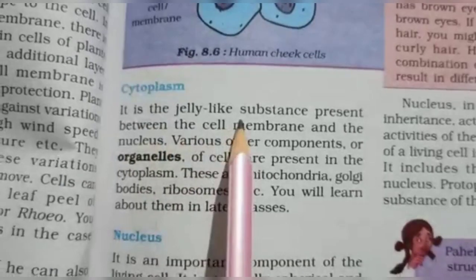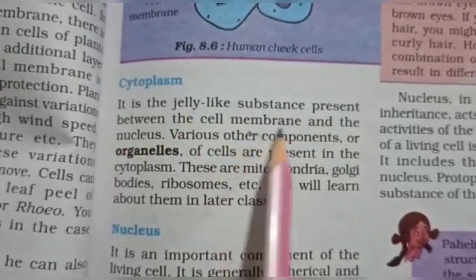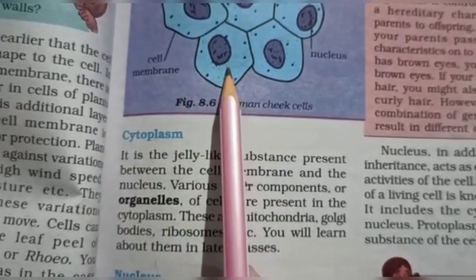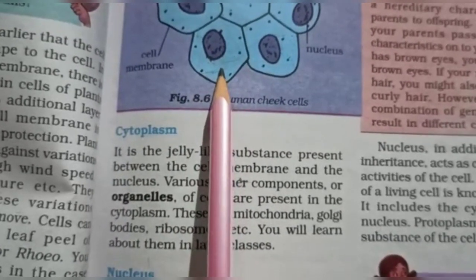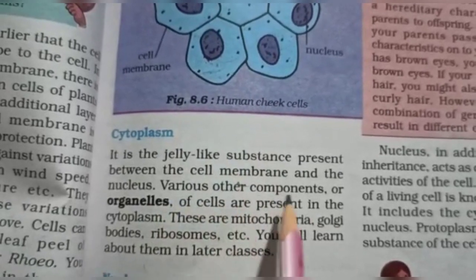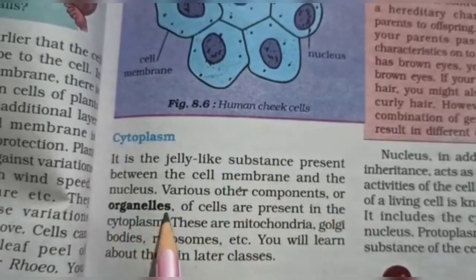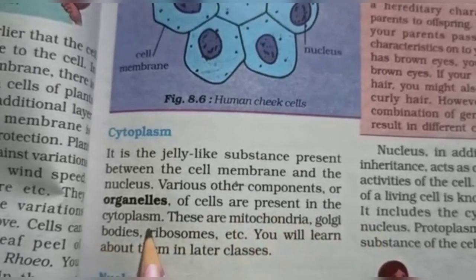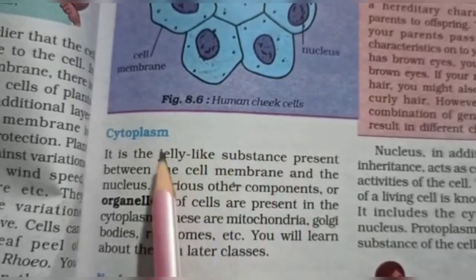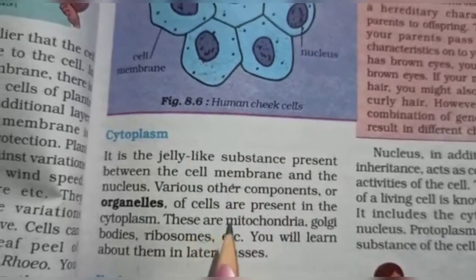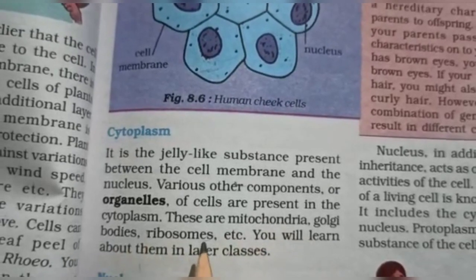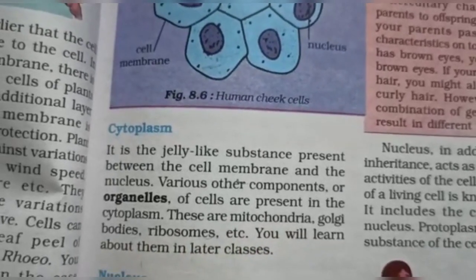Cytoplasm is the jelly-like substance present between the cell membrane and the nucleus. The various types of components and organelles are present in the cytoplasm. These include mitochondria, Golgi bodies, ribosomes, etc. You will learn about them in detail in later classes.